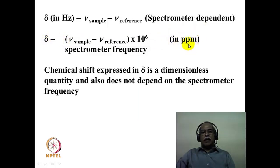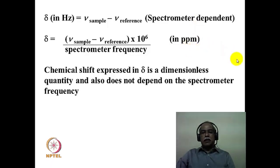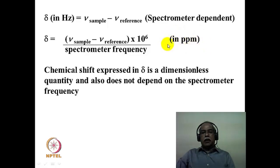That is why delta is represented in parts per million (ppm) in NMR experiments. Delta expressed in ppm is a dimensionless quantity and is independent of the spectrometer frequency. So it does not matter whether one records the NMR spectrum on a 60 MHz or a 600 MHz NMR spectrometer — when delta is expressed in ppm, it is independent of the spectrometer, and measurements from one spectrometer can be easily compared with those from another.